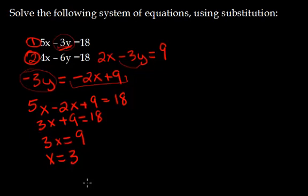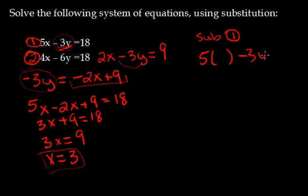Okay. So I've solved for one variable. Awesome. I'm not done the question yet because you have to solve for y. So now you take this here, x equals 3, and substitute it back into one of the original equations. So let's sub it into equation one, and we end up getting 5 times 3 minus 3y equals 18.